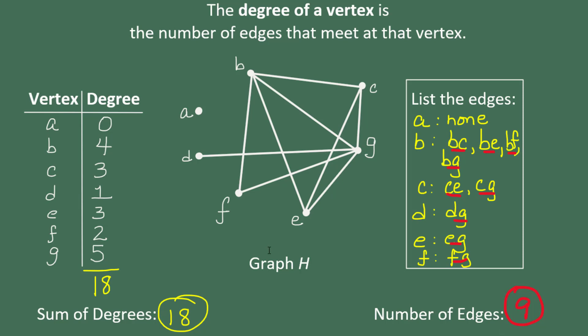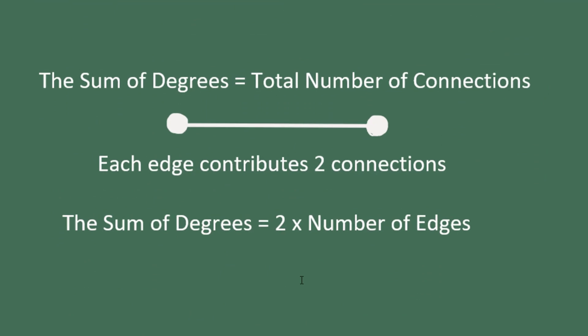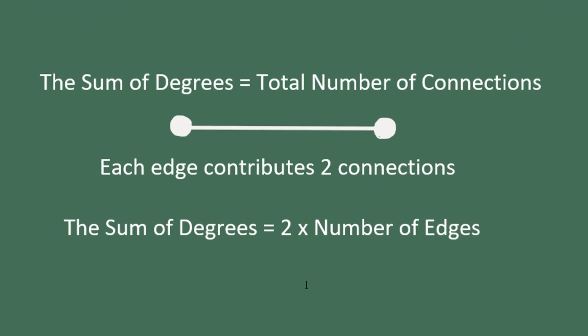Why might that have happened? Is that something that will happen all the time? Well, think about it this way. The sum of the degrees is the total number of connections between an edge and a vertex. Each edge contributes two of these connections. So when we add up all the degrees and get the total number of connections, we're going to get twice the number of edges.